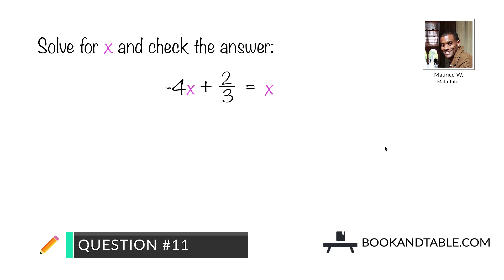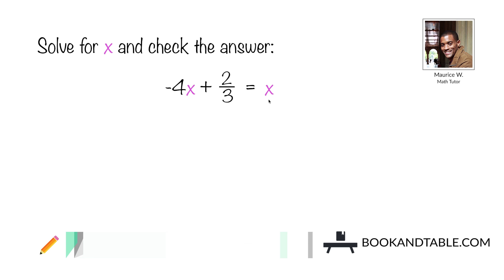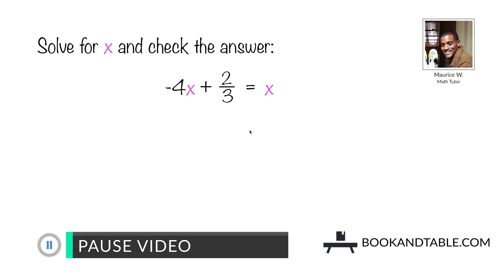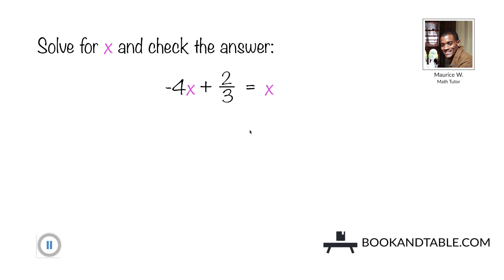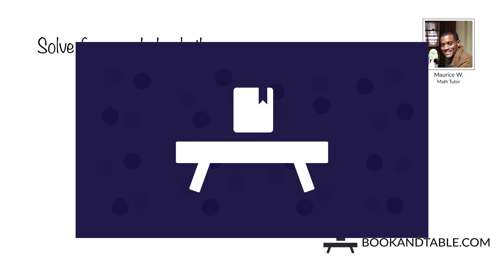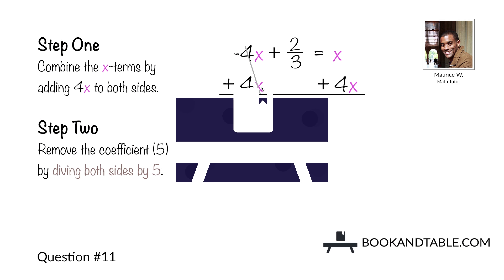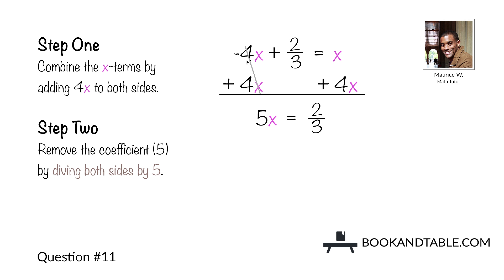Question number eleven: things get a little more difficult because now we have our x term on both sides of the equal sign. Solve for x and check the answer: negative 4x plus 2/3 is equal to x. Since the constant is on the left side, I'm going to move the x term from the left to the right. We do that by adding 4x to both sides. Negative 4x and positive 4x cancel, leaving us with just 2/3 on one side.